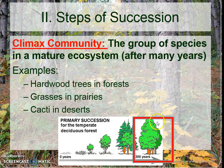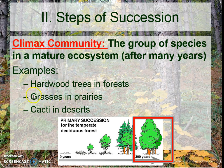By the end, we call that end point — that mature community, that mature ecosystem after many years — we call it a climax community. In our area, it's hardwood trees because we live in the deciduous forests. In the Midwest, in the middle of the country, it would be grasses and prairies. And out west, think Arizona, we have cacti and deserts. So it depends on what the ecosystem is.